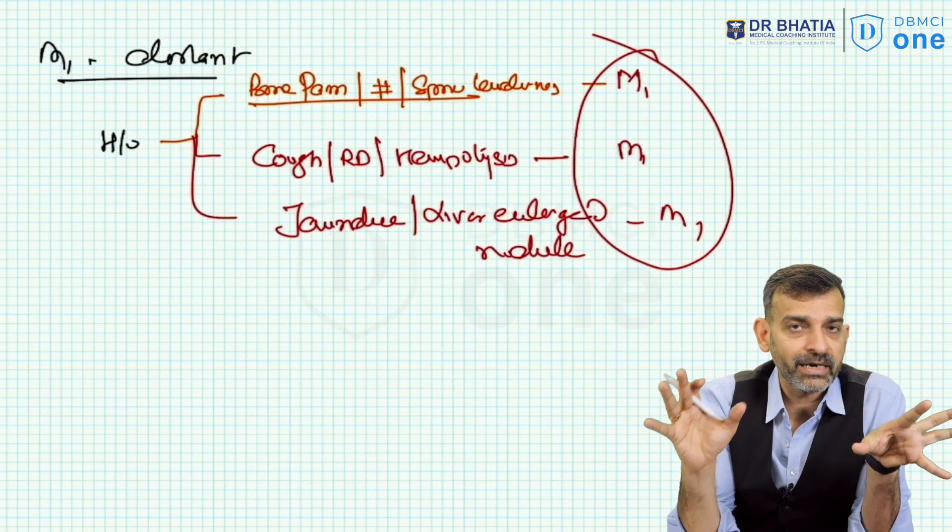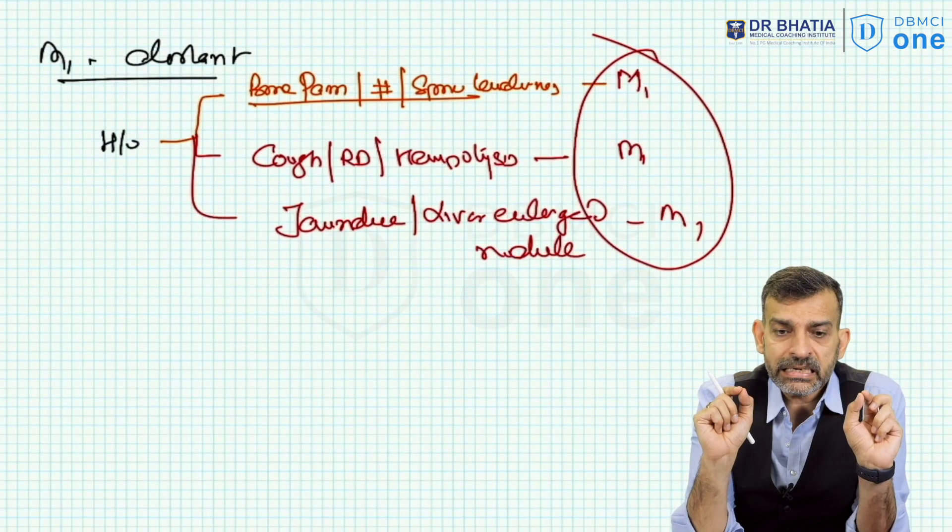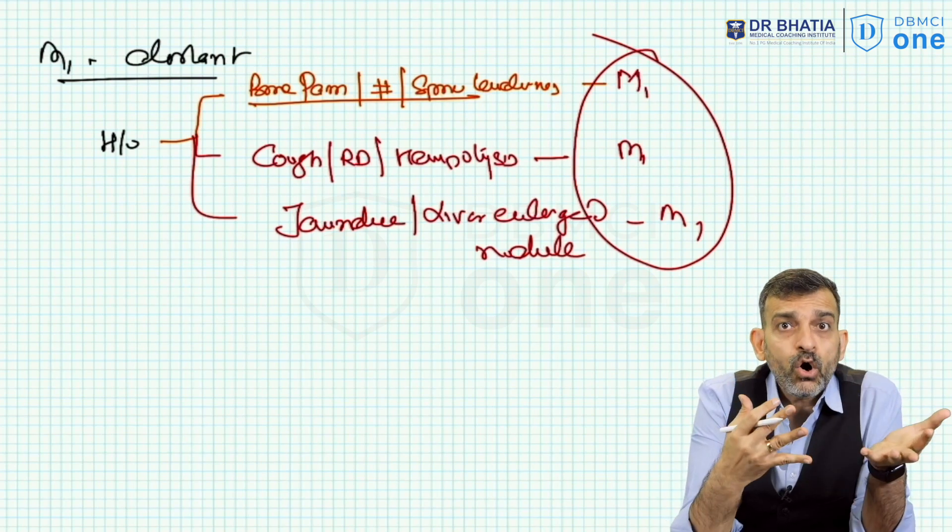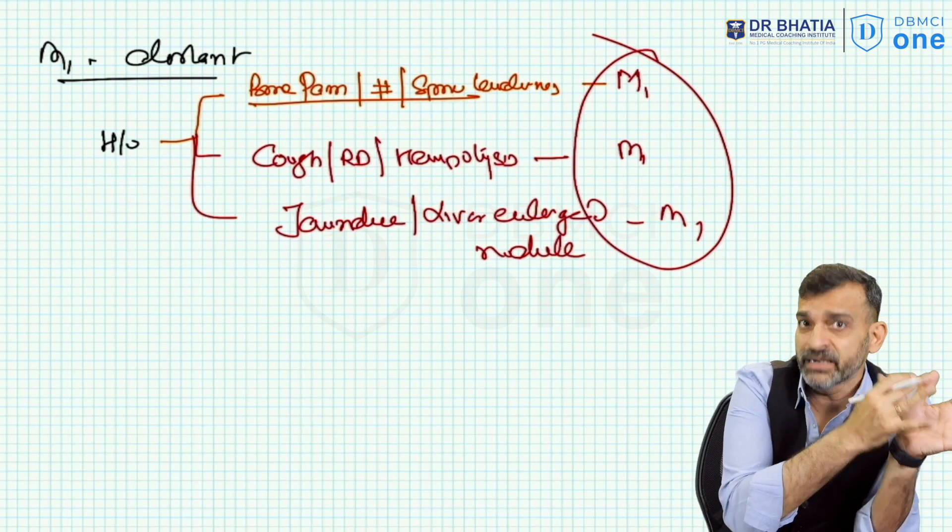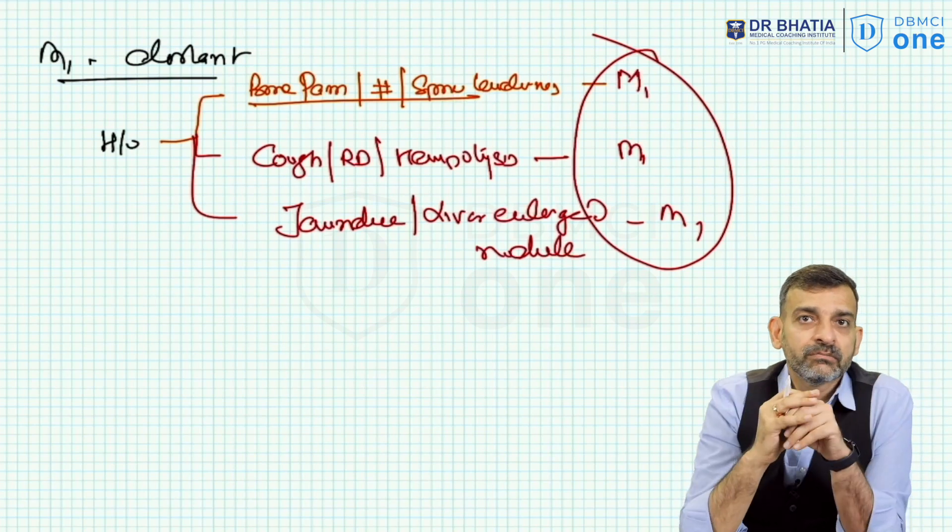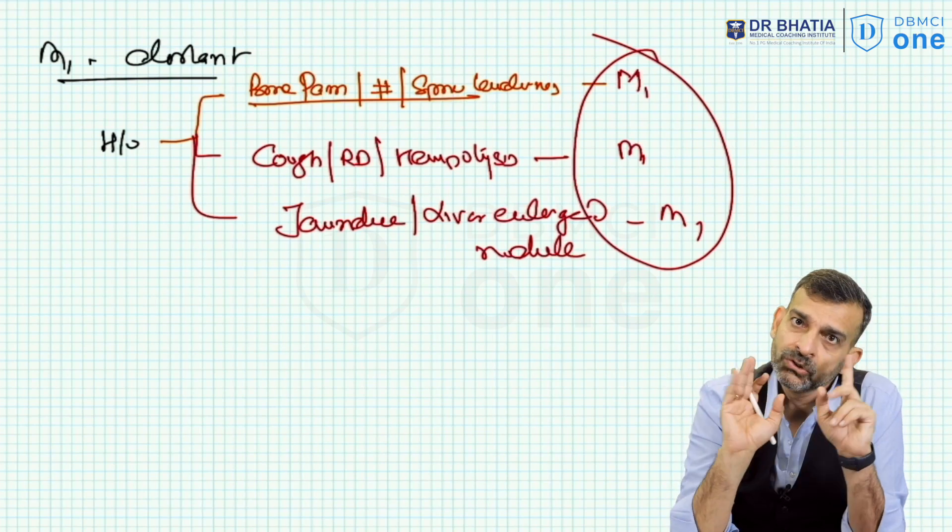So you can summarize here: whenever a patient is symptomatic of the four common sites of metastasis, I will stage this patient as an M1 patient - meaning a distant metastasis patient. Just remember this.